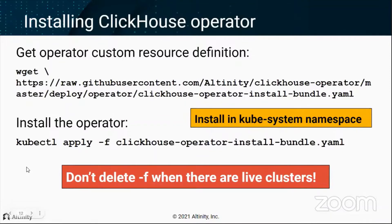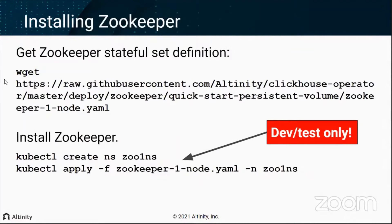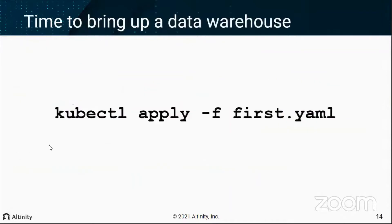You also need ZooKeeper. We have scripts in our GitHub repo to set it up. Here's a dev/test example - health and safety note: this is only one ZooKeeper instance, not production-ready. Run these commands and you'll have ZooKeeper running in a namespace called 'zoo1ns'. Kubernetes creates DNS names using the namespace, so you can find the ZooKeeper load balancer by its DNS name. With the operator and ZooKeeper running, you can bring up a data warehouse with sharding and replication.